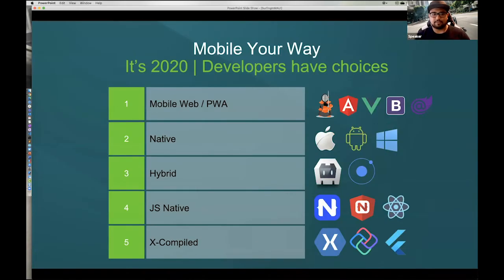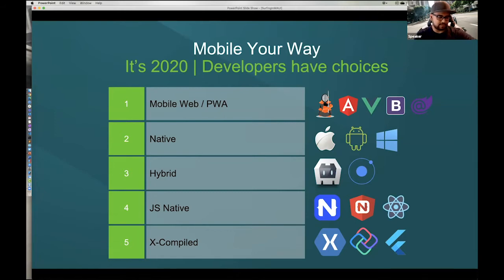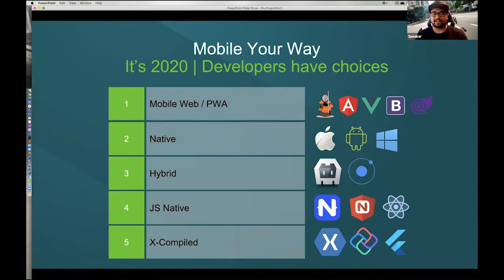Let's talk about mobile and take a step back. Here's my one-minute overview of all the different ways you can build for mobile. It doesn't always need to be an app, and there are a lot of choices, which is a good thing. If you want to build a native app for iOS, Android, or Windows, you always can — that's the native app story, closest to the metal. But it's difficult and pricey because you're maintaining three different code bases for a single app.